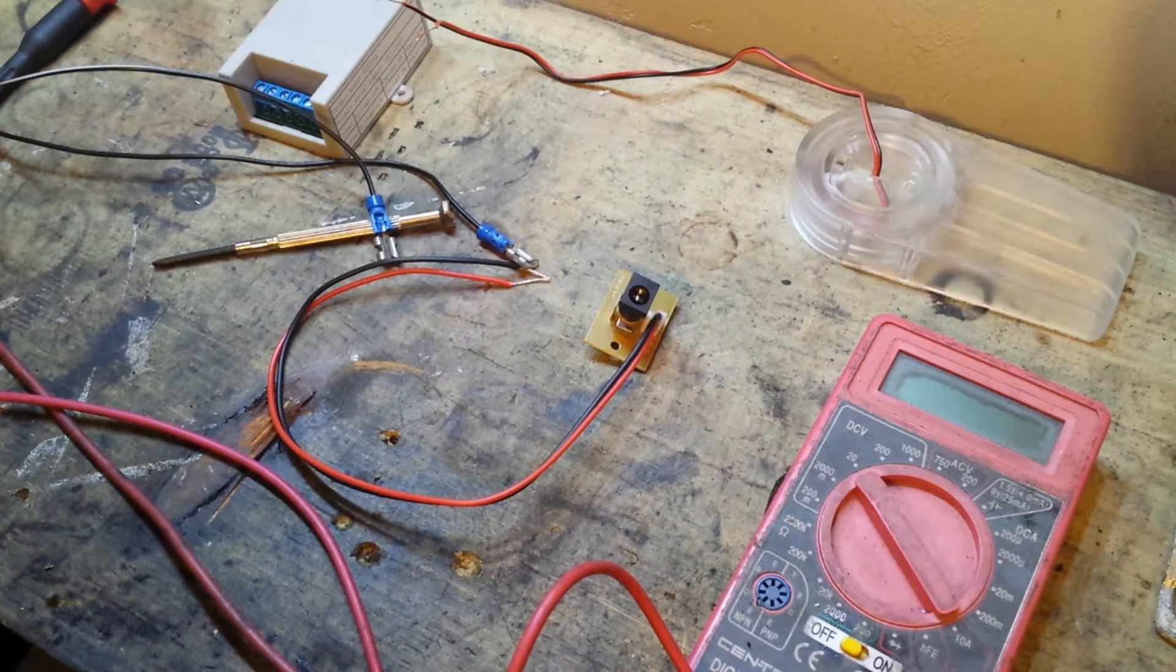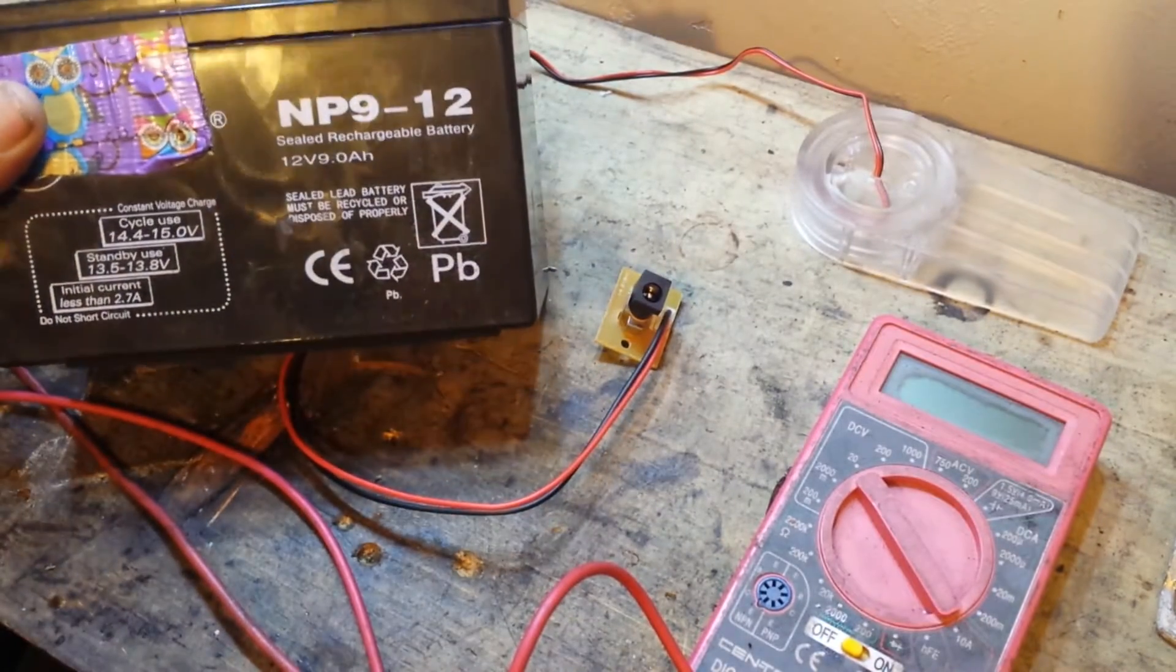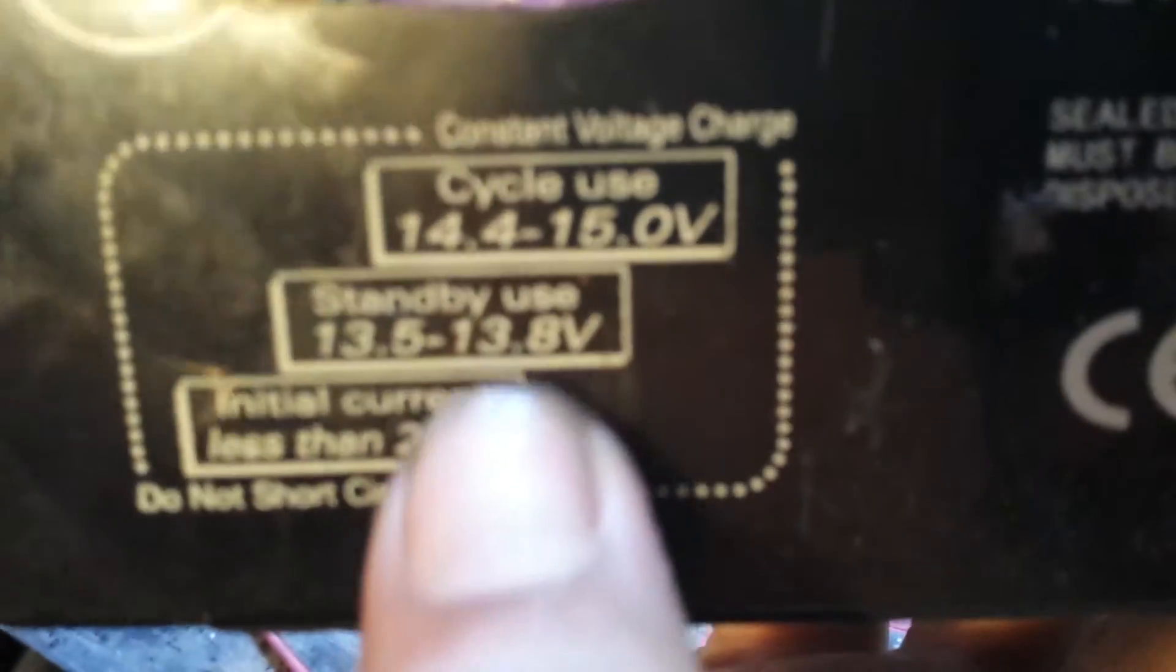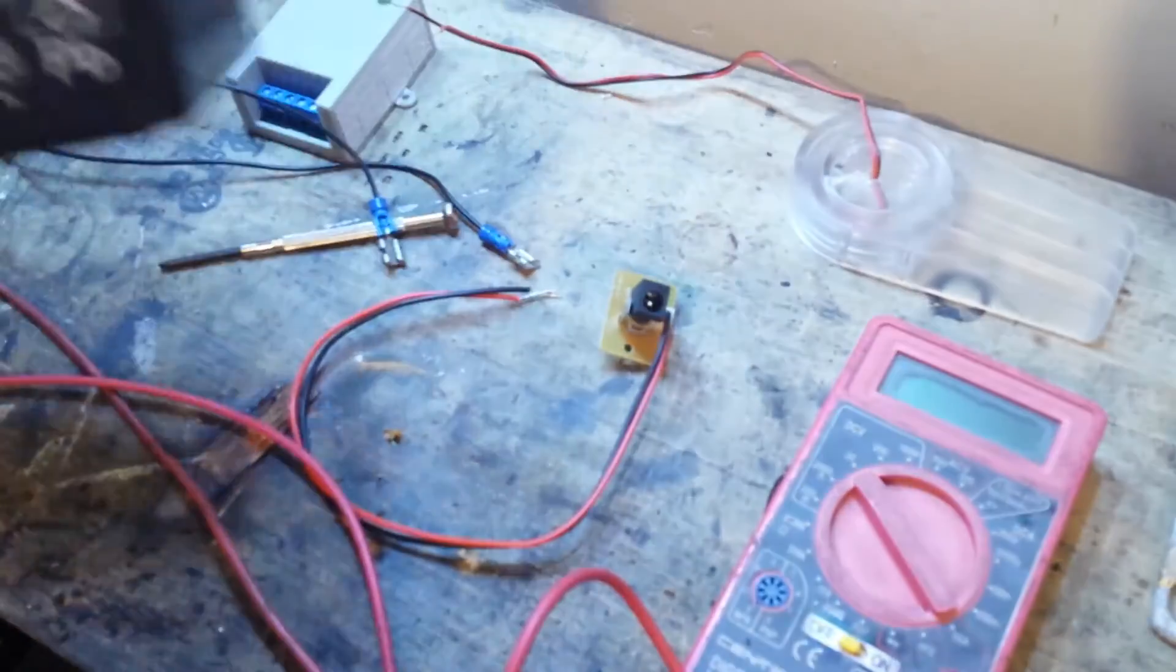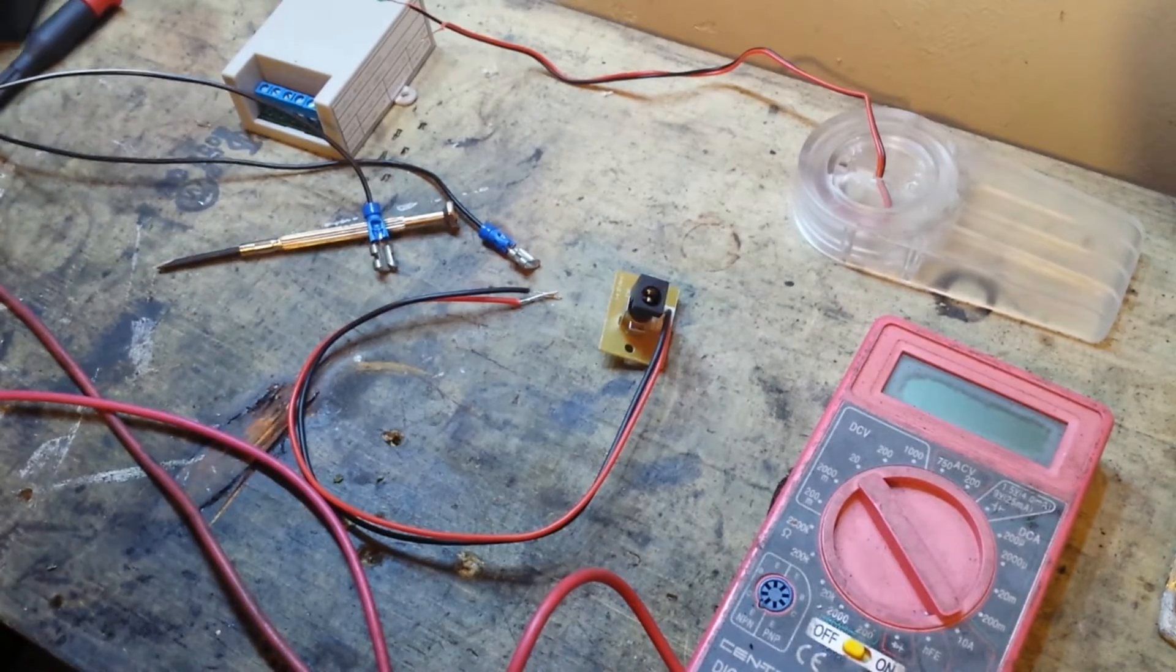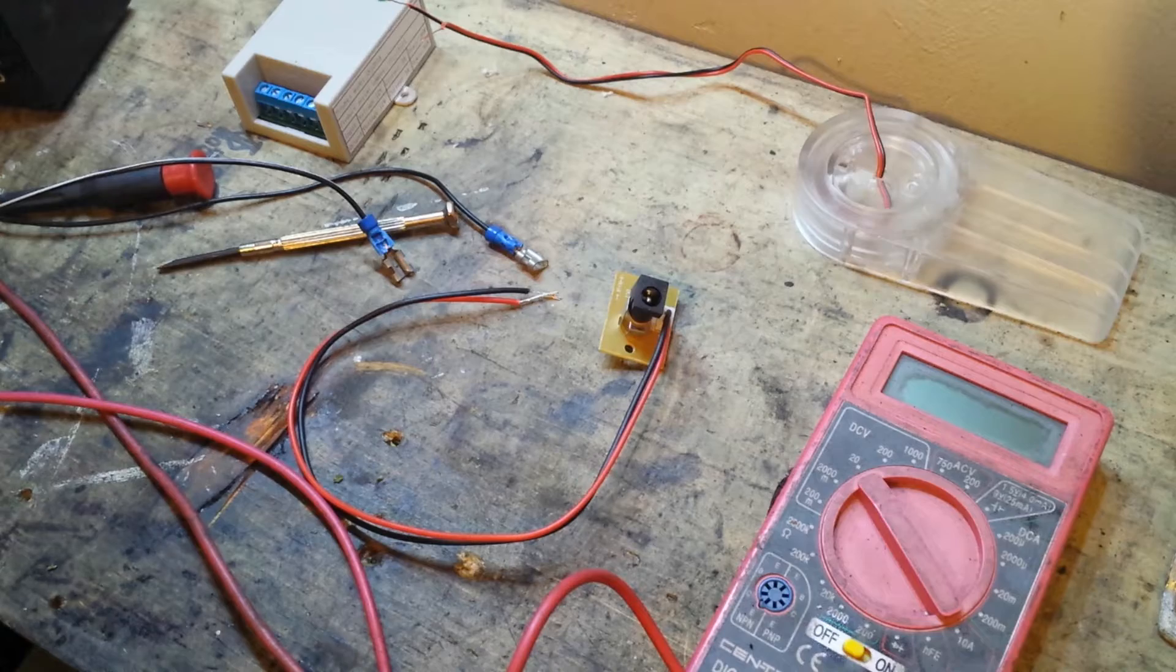Hey guys, Thrift Store Hacker back again. I need to charge one of these 12-volt batteries. It's a 9 amp-hour battery with a cycle usage of 14 to 15 volts and standby of 13.5 to 13.8 volts. I don't have a charger that will charge at a low enough amperage to do that.